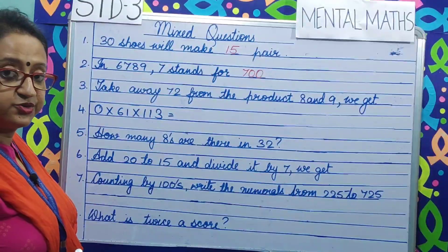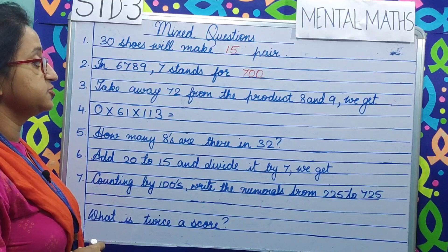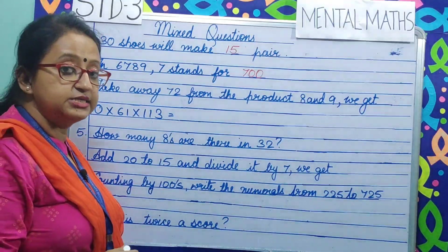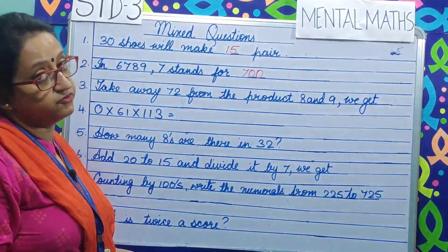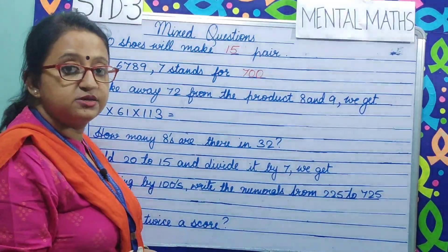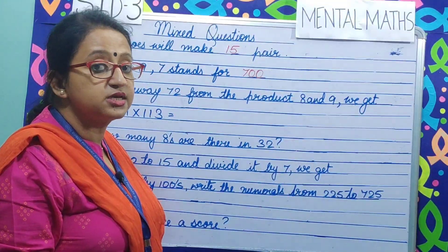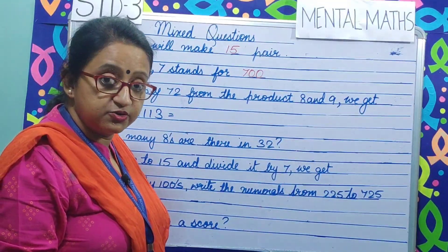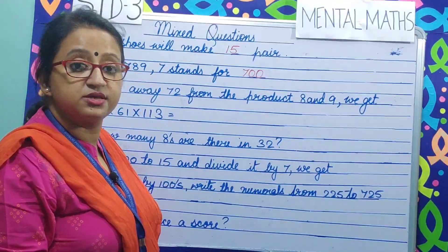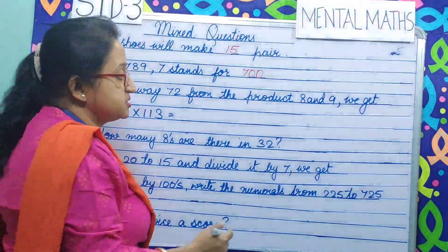Question number 3. Take away 72 from the product of 8 and 9. We get 8 multiplied by 9 is 72. So 72 minus 72 makes it 0.